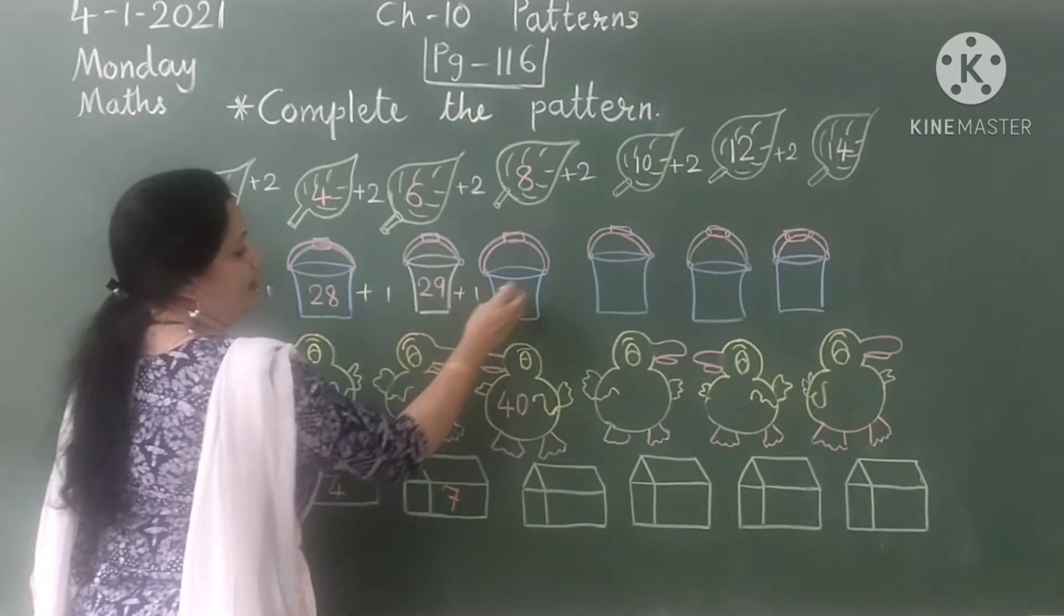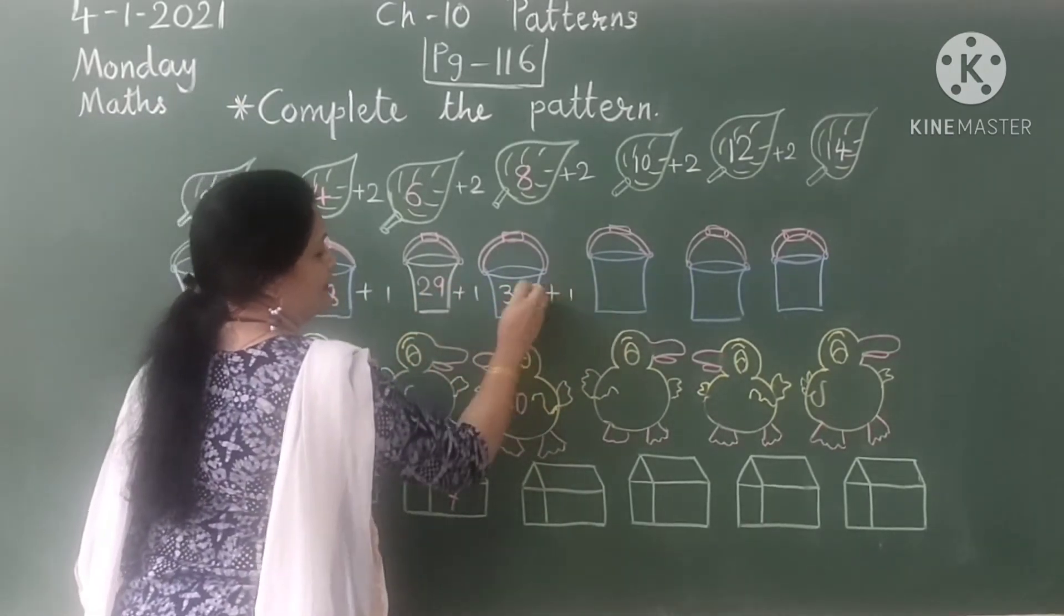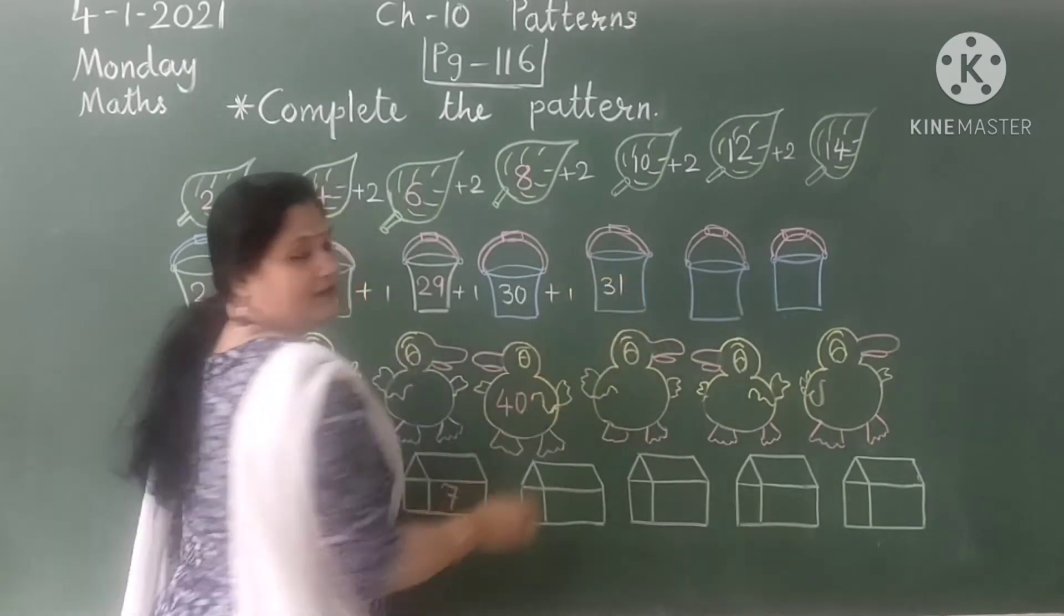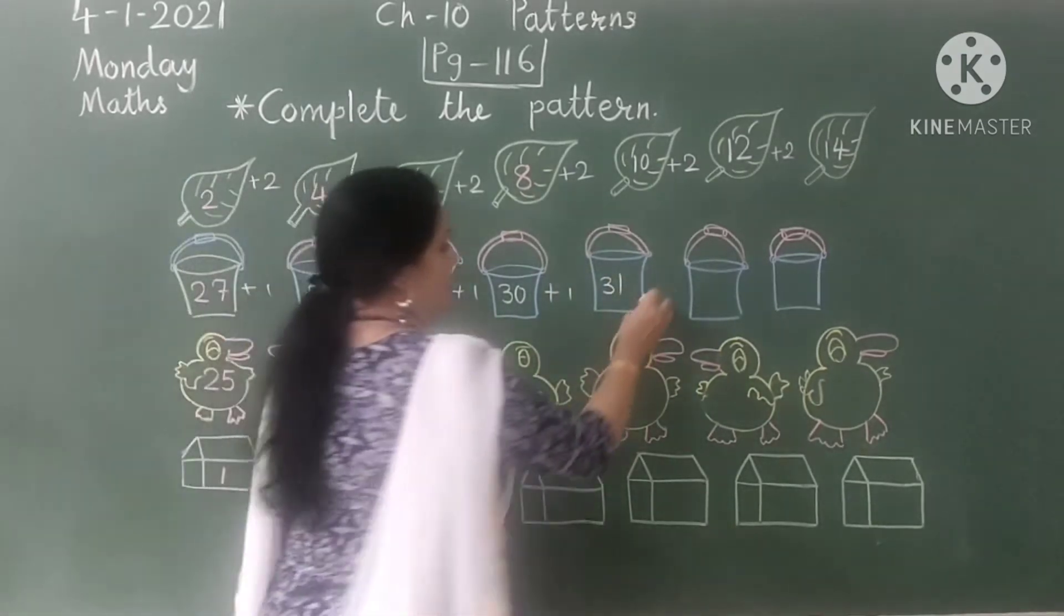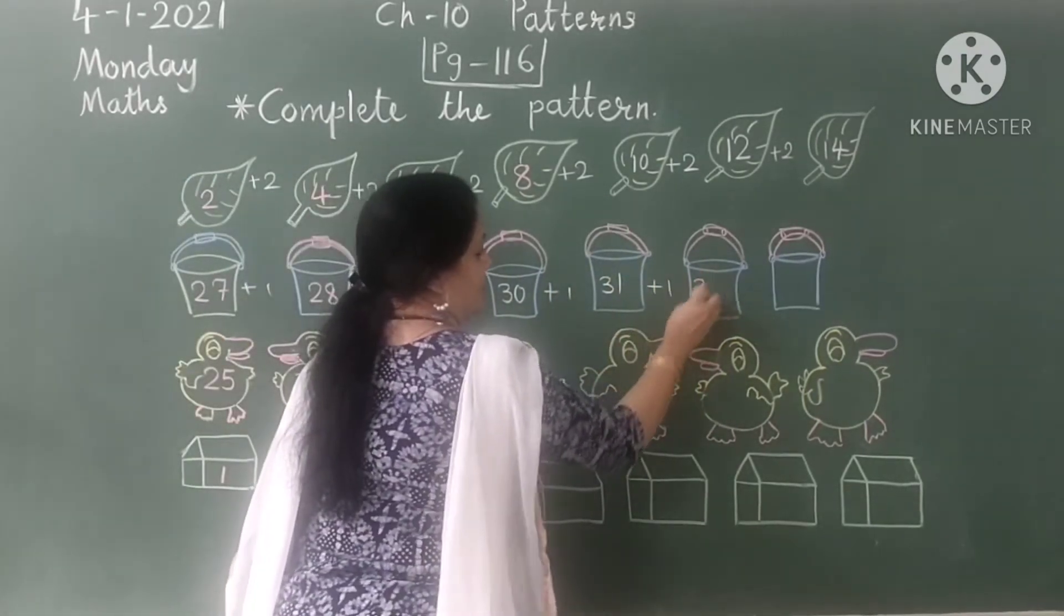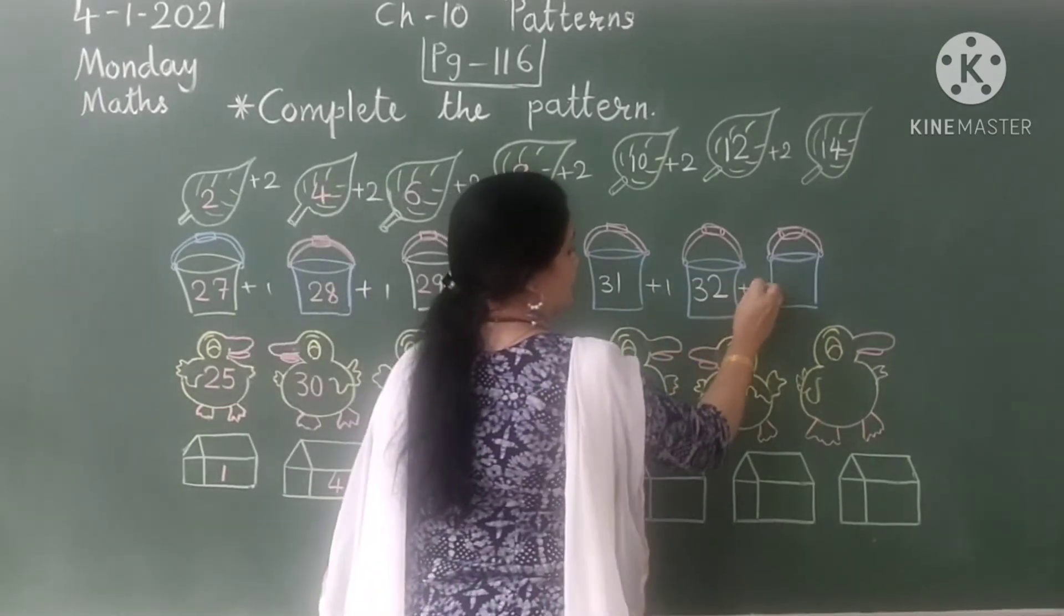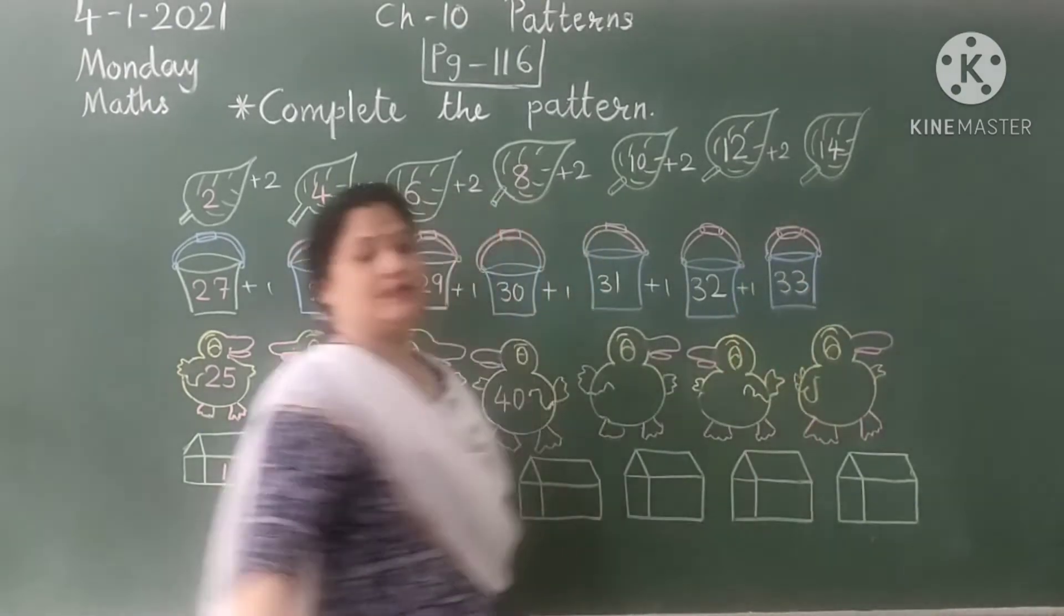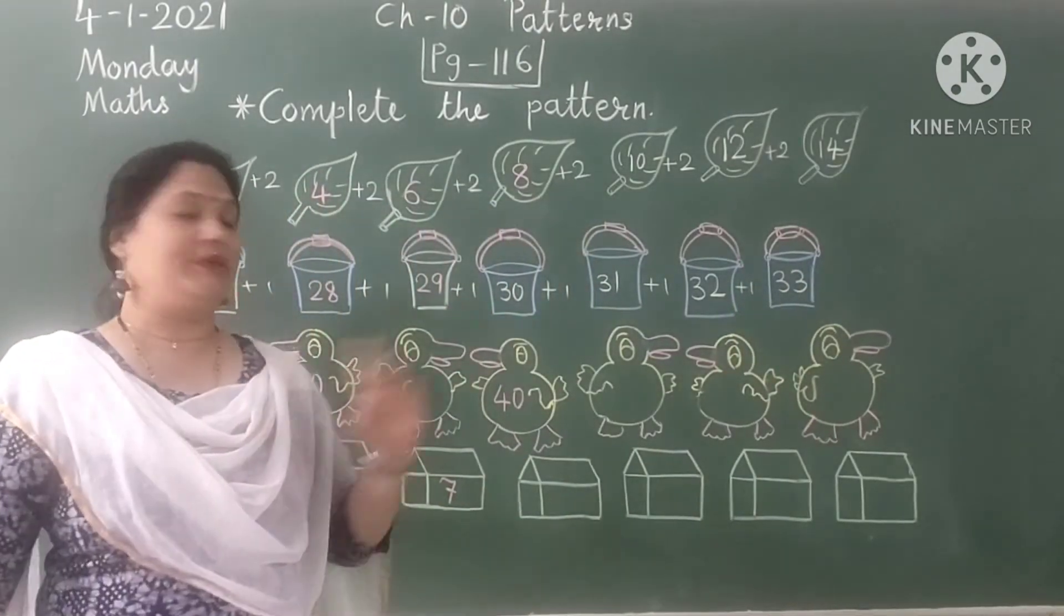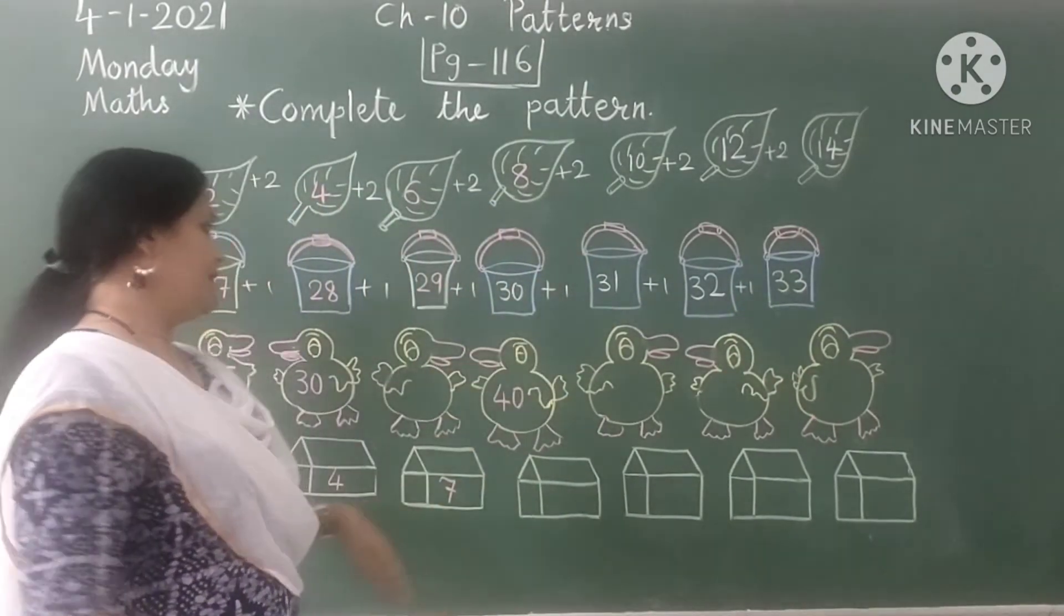So plus 1 is 30, plus 1 is 31, 31 plus 1 is 32, 32 plus 1 is 33. So we have to add 1 more number in each bucket.